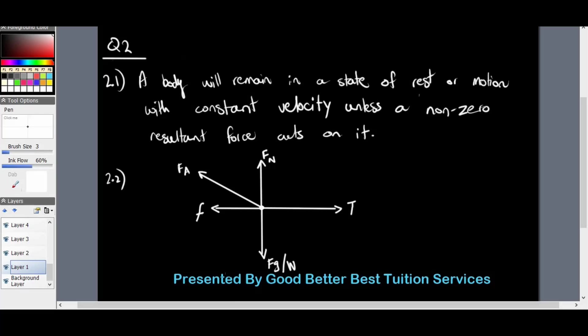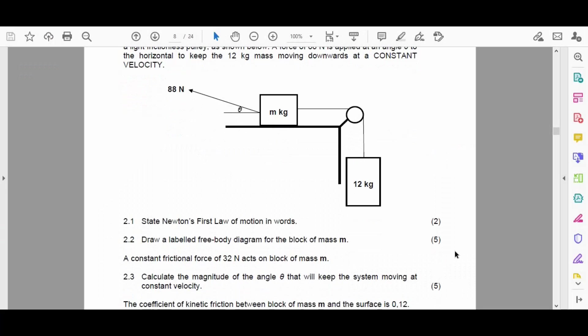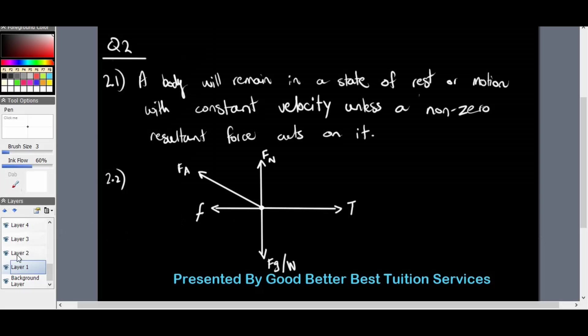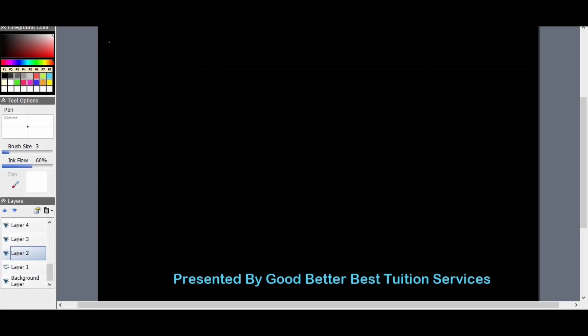Before we get to 2.3, they give us more information saying that a constant frictional force of 32 newtons acts on block m. 2.3 says calculate the magnitude of the angle theta that will keep the system moving at a constant velocity. We first start this question by looking at the formula for Newton's second law, which is F_net equals mass times acceleration. We know that acceleration is equal to zero because the blocks are moving at constant velocity, meaning that we have F_net equals zero.